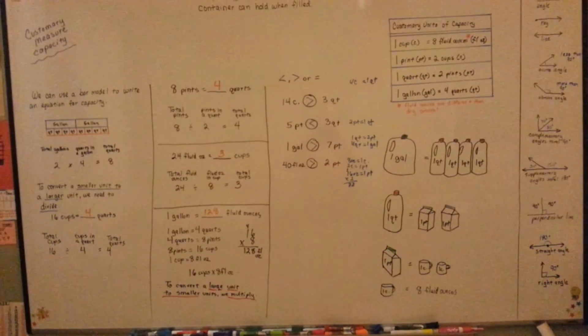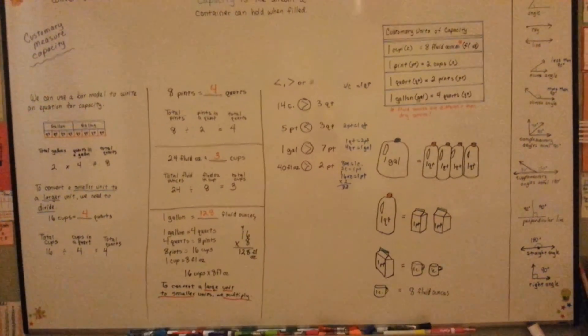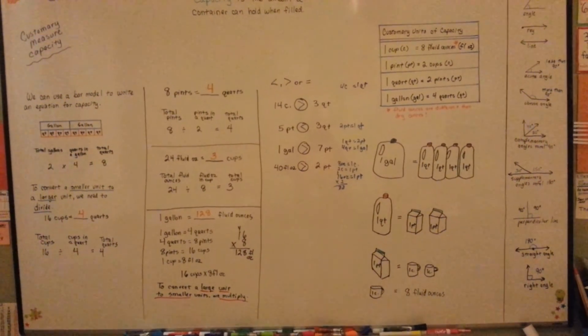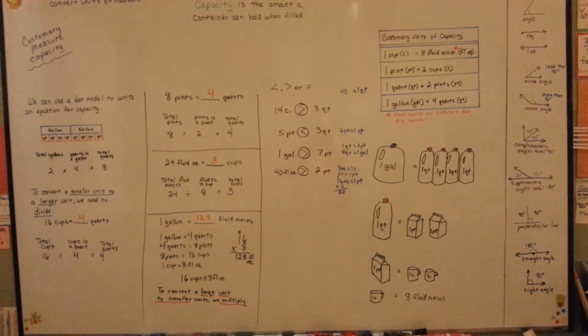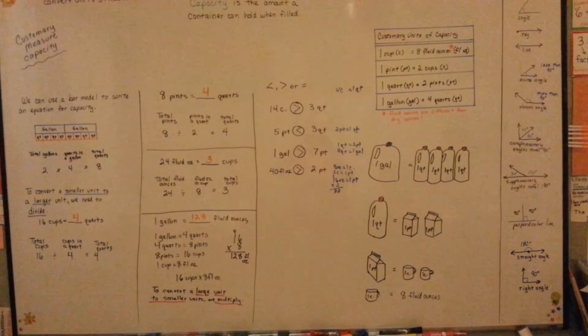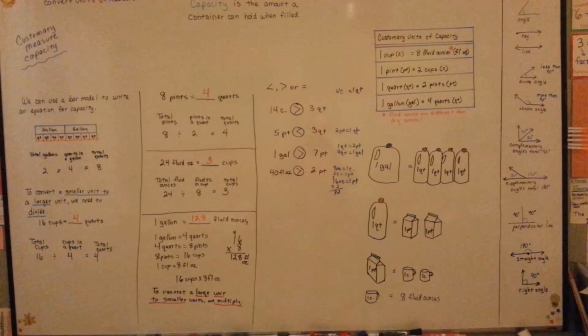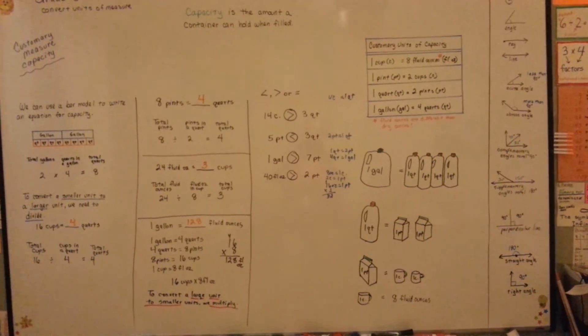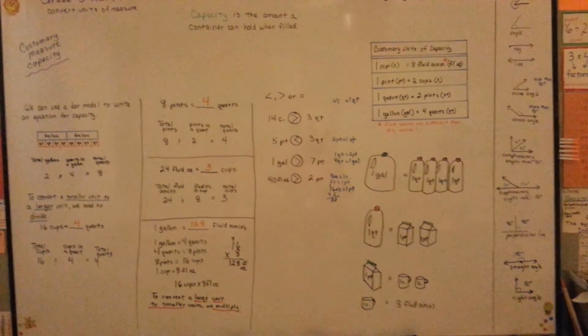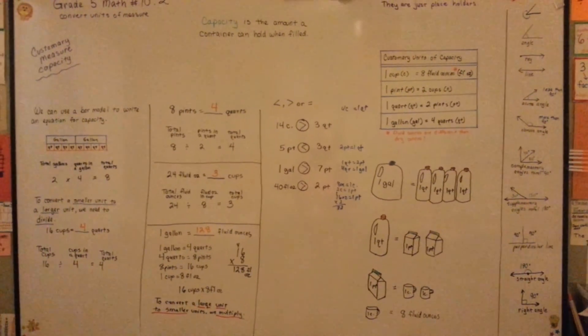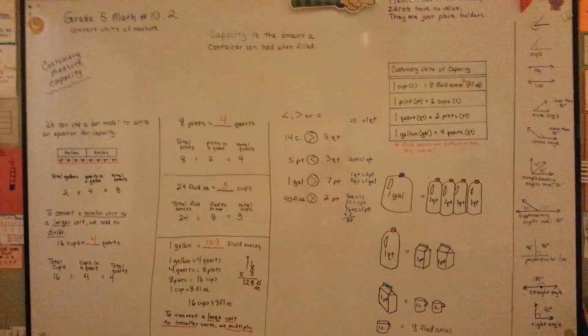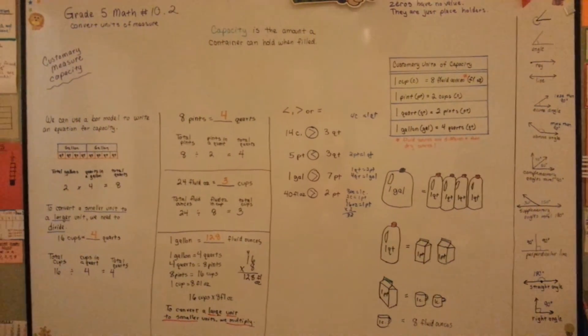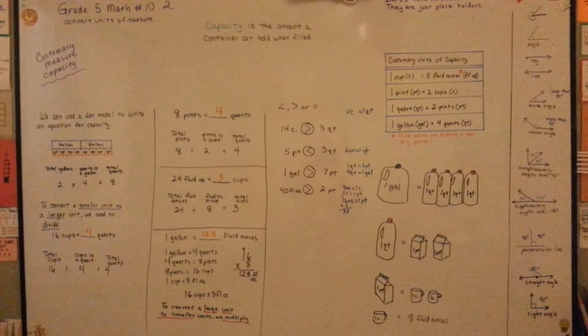Try to remember: there are 4 quarts in a gallon, 2 pints in a quart, and 2 cups in a pint. It wouldn't hurt to memorize that there are 8 fluid ounces in a cup, too. I'll see you next video. Bye!